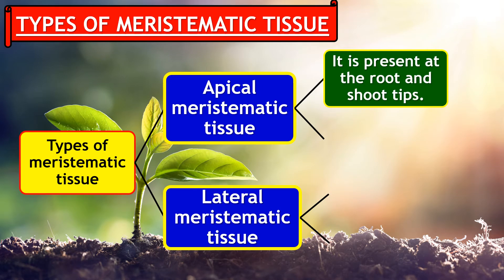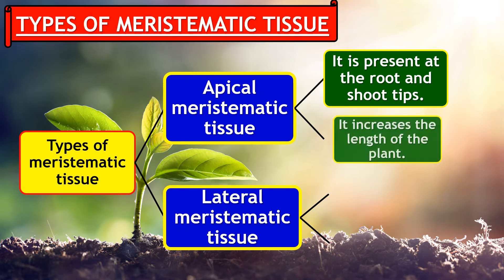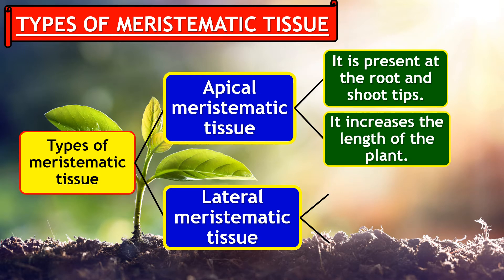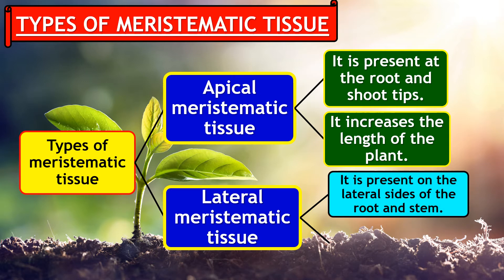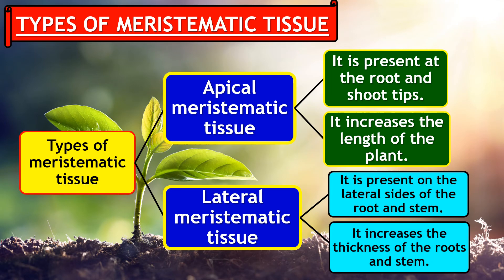Apical meristematic tissue is present at the root and shoot tips and increases the length of the plant. Lateral meristematic tissue is present on the lateral sides of the root and stem, and it increases the thickness of the roots and stem.